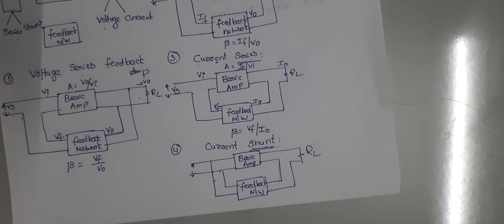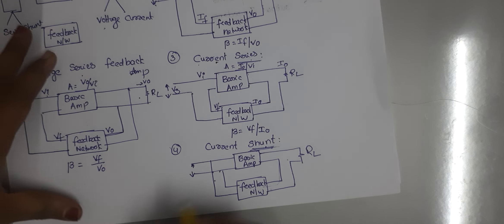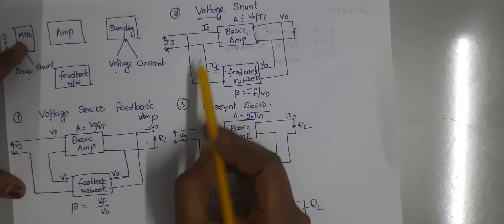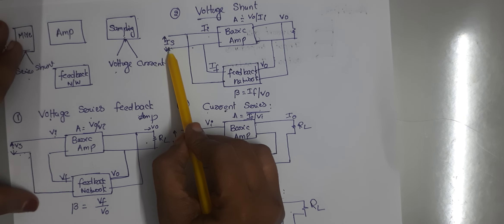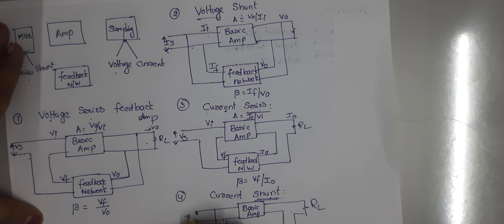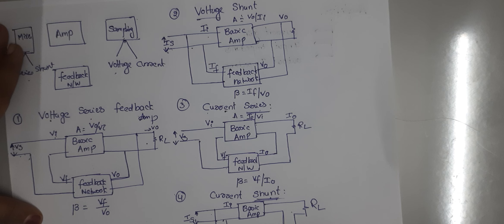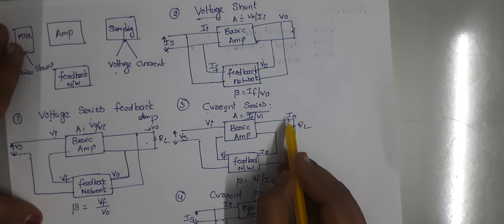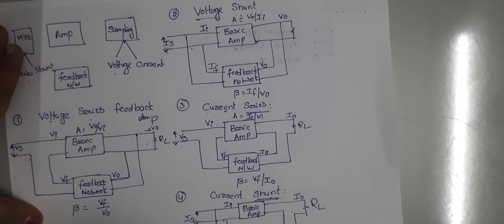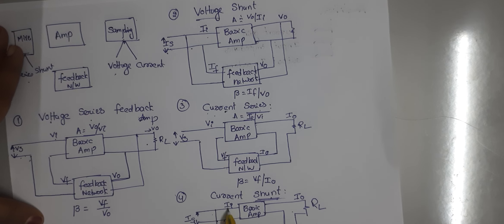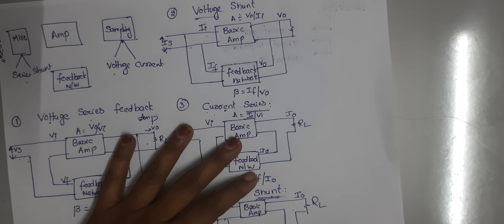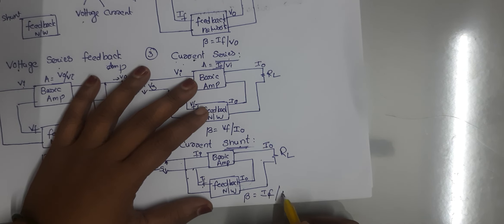Since it is shunt mixing, the source signal is the current signal IS. Here Ii and If are the input and feedback currents. Current sampling means the output is I0. So here I0 and If are defined. Beta is equal to If divided by I0. This completes all four topologies of the feedback amplifiers.